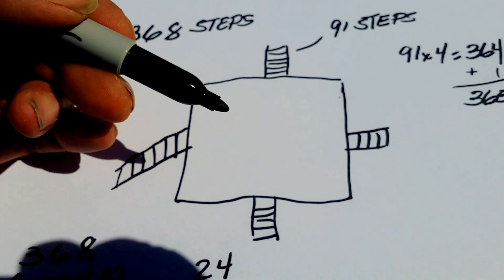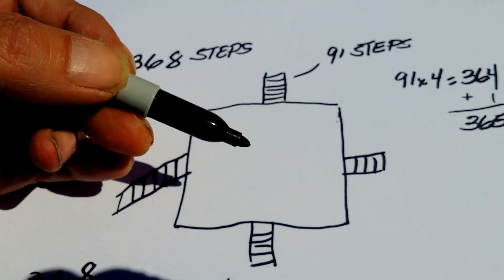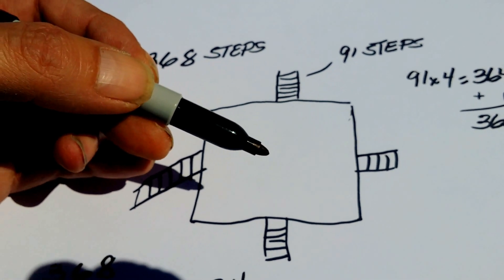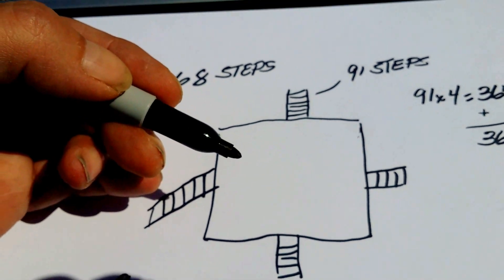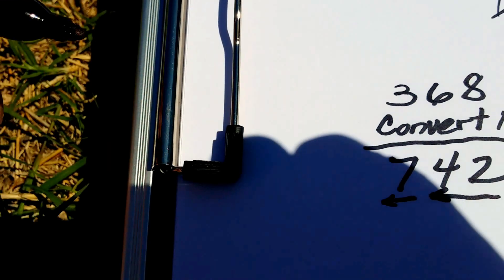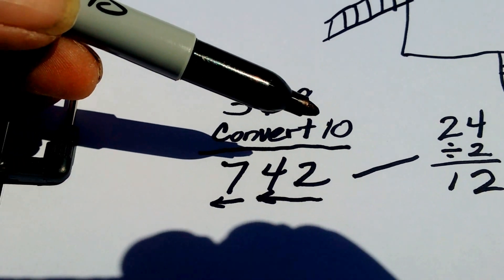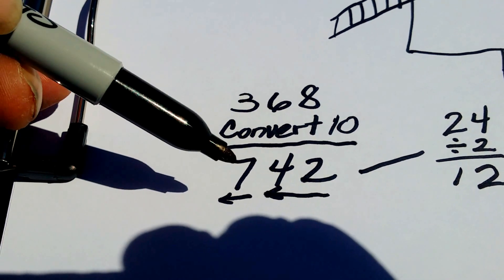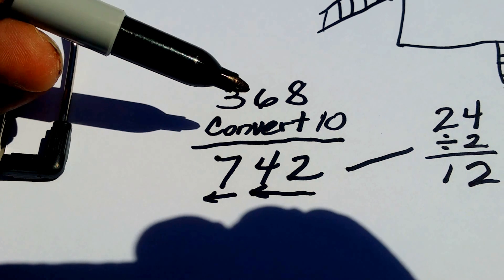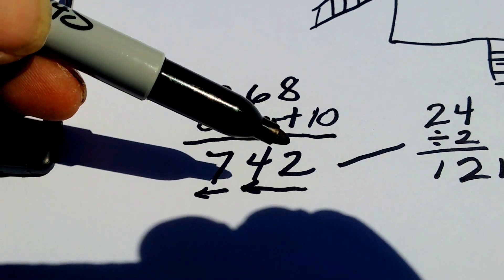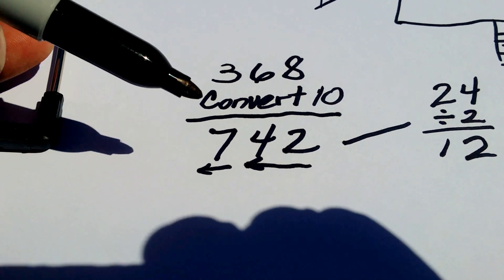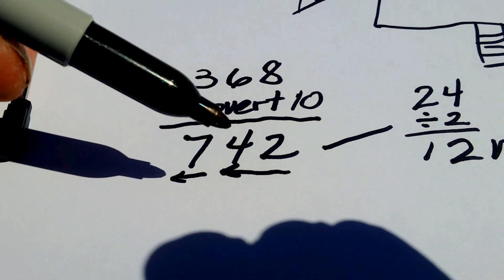There's 10 levels to it. That also happens to be how many digits we have on our hands and on our feet, the 10 factor. So let's go 368, convert 10. 3 and a 7 adds to a 10, 6 and 4 adds to a 10, and 8 and 2 adds to a 10. So now we have the numbers 742.